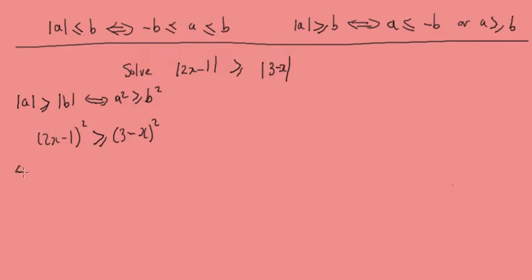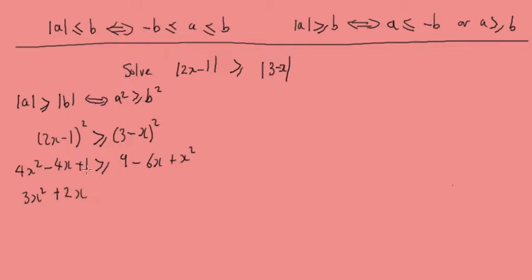Expanding gives us 4x squared minus 4x plus 1 is greater than or equal to 9 minus 6x plus x squared. Bringing everything to one side: 3x squared plus 2x minus 8 is greater than or equal to 0.